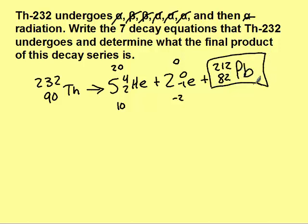And 82 corresponds to lead. So you could have gotten the same final product regardless of which way you went. Obviously this way was much faster than writing out all seven equations.